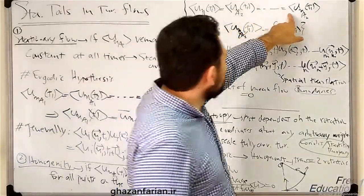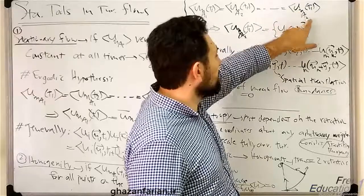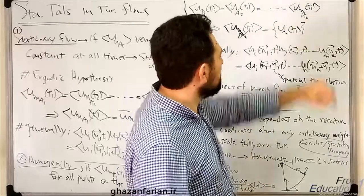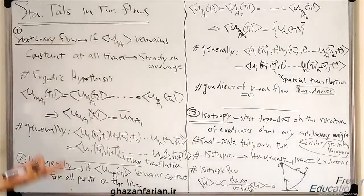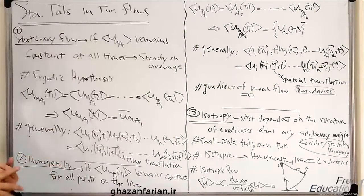and equals the x component of velocity at point Am at time T1. This is the definition of homogeneous turbulent flow from the statistical viewpoint.